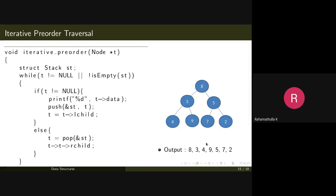Nine has no left child and no right child, so it is popped out. Then 8 is popped, and t goes to 8's right child — node 5. Five is not null so 5 is pushed and printed, continuing until 7 and 2 are printed. The final output is: 8, 3, 4, 9, 5, 7, 2 — matching the expected pre-order result.